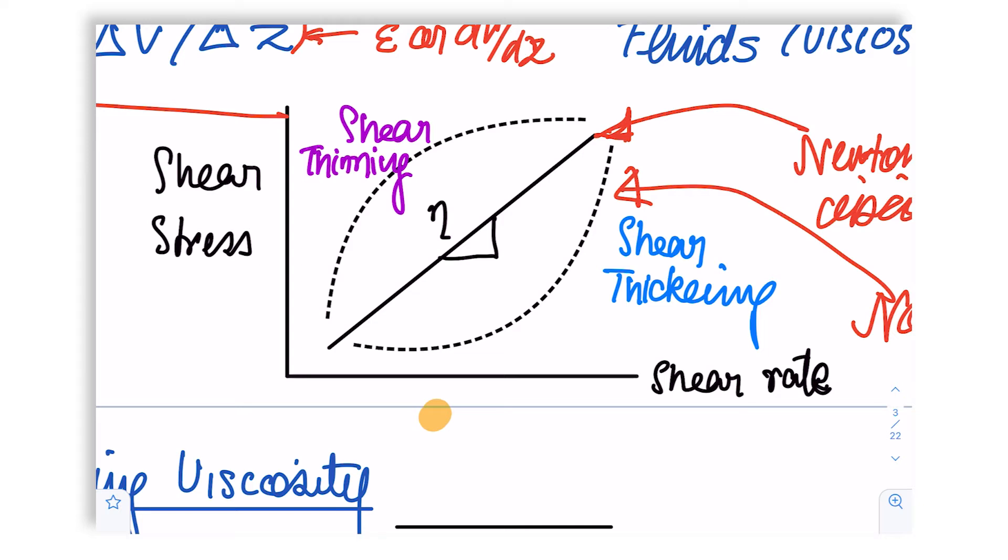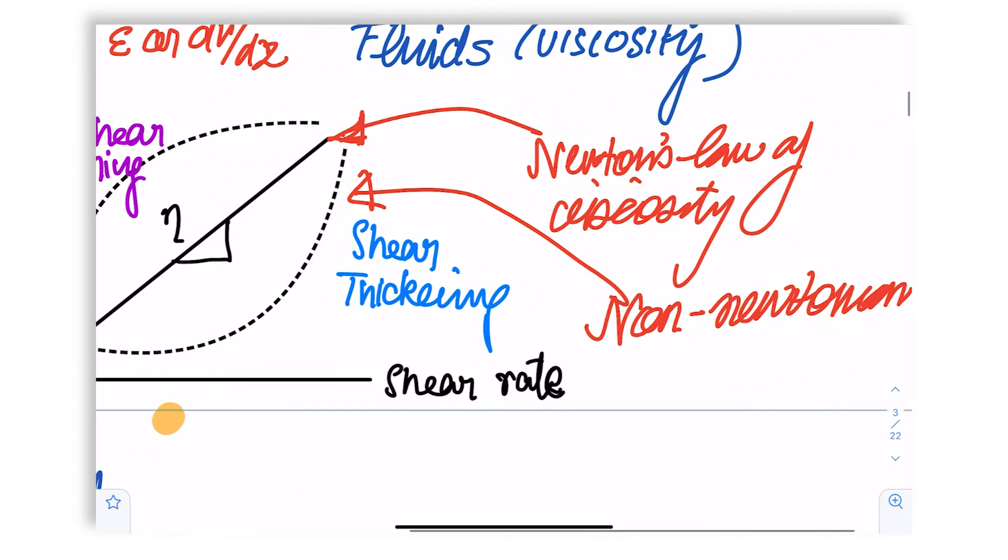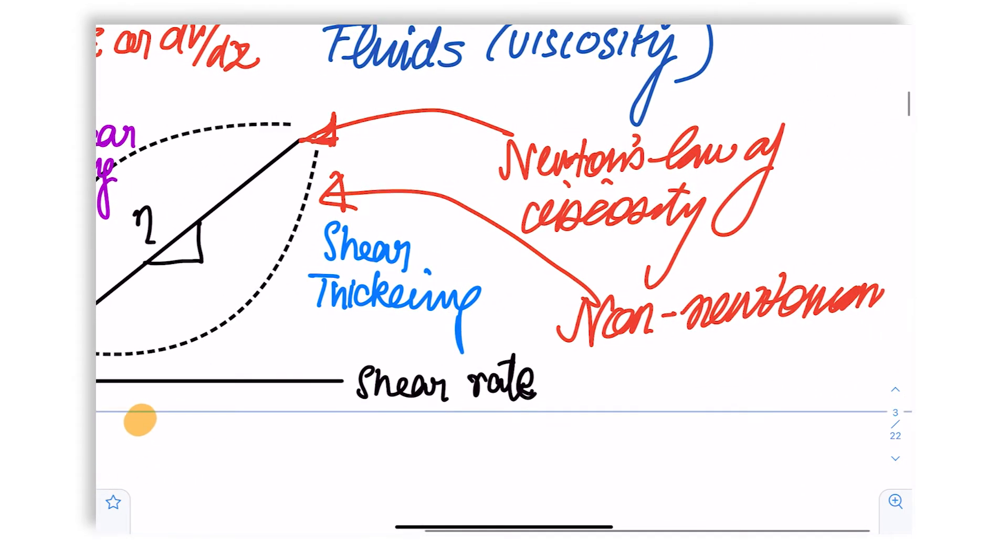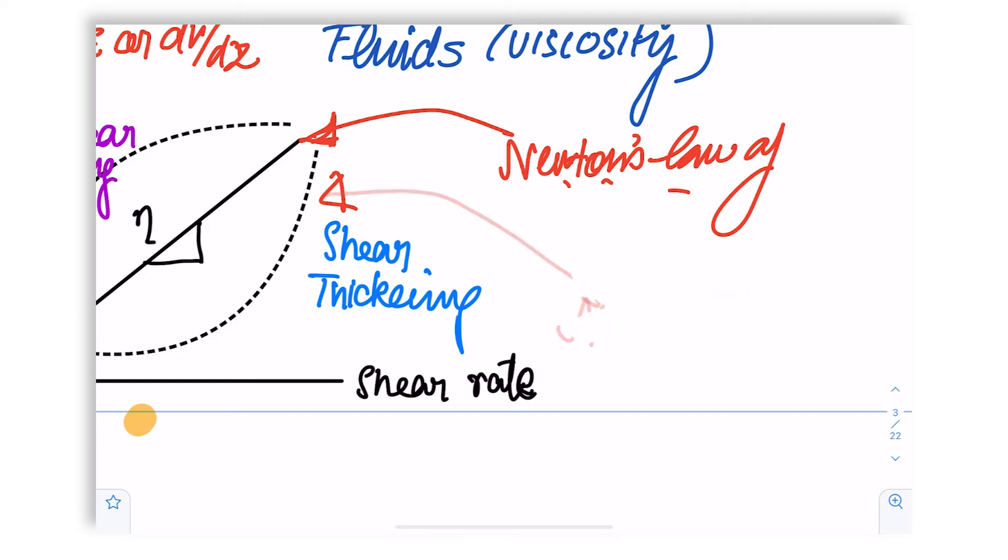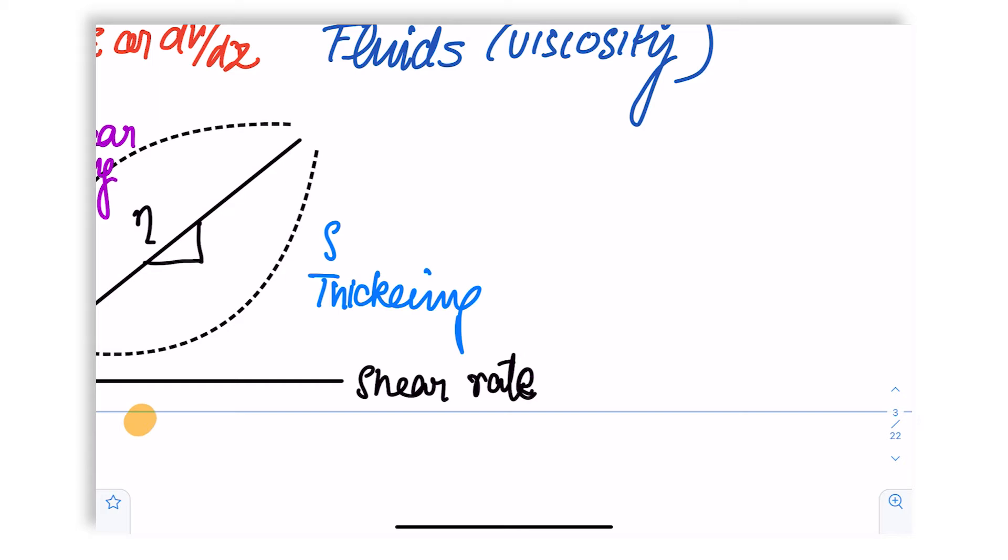However, there are fluids that deviate from this. Either the increasing shear rate leads to a very rapid and unsaturating value of shear stress, or it leads to a slow one. Depending on that, they are either referred to as shear thinning or shear thickening, and these indeed are deviations from Newton's law of viscosity and therefore will get referred to as non-Newtonian fluids.